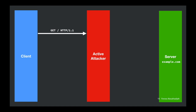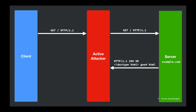Say the client requests the homepage of a website — sends a GET request. The active attacker lets it go through unmodified. The server responds with some HTML. From the server's perspective this proxy is the client it thinks it's talking to. The active attacker modifies the HTML — adding its own JavaScript that changes the behavior of the page, stealing information, or doing whatever the attacker wants — and forwards the evil HTML back to the client.